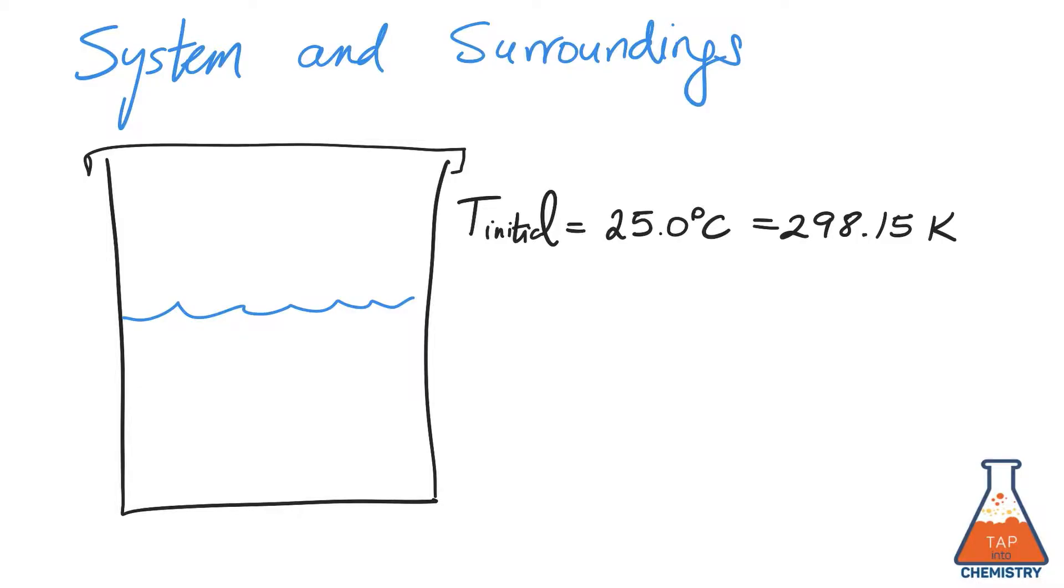In this video we're going to discuss the difference between system and surroundings. Consider the following calorimeter containing a solution initially at 25 Celsius or 298.15 Kelvin and a chemical reaction takes place inside of this calorimeter.